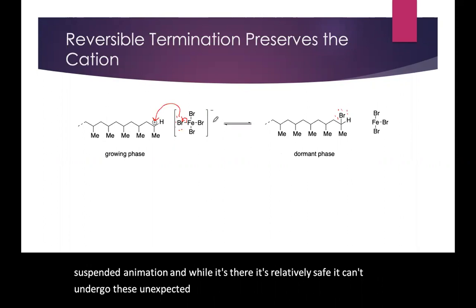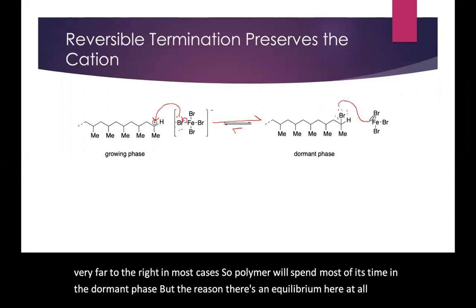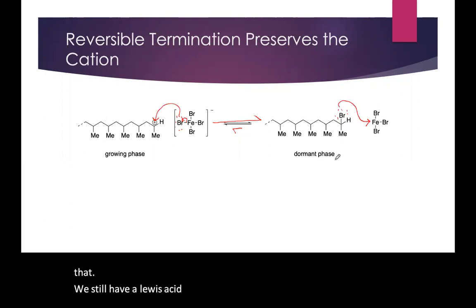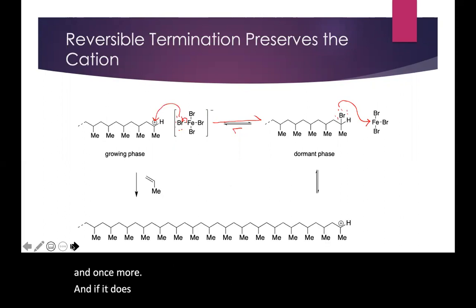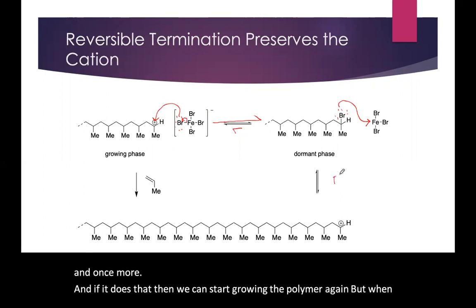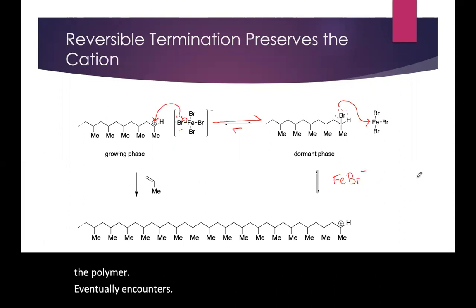This equilibrium lies very far to the right in most cases, so the polymer will spend most of its time in the dormant phase. But the reason there's an equilibrium at all is that the Lewis acid can coordinate to the halide and actually remove it from the polymer chain end once more. If it does that, we can start growing the polymer again. But when the polymer eventually encounters the Lewis acid once more, it can re-terminate and go back into the dormant phase.